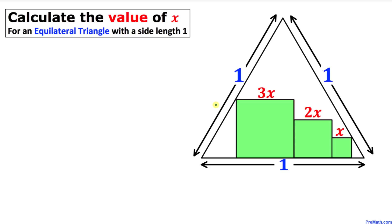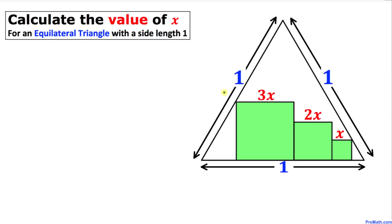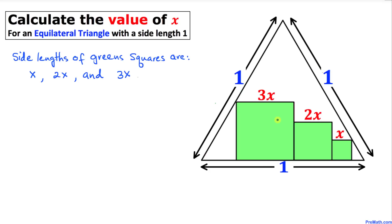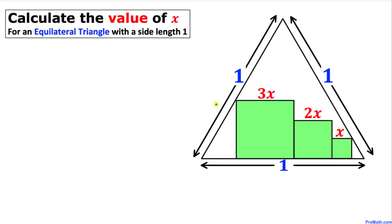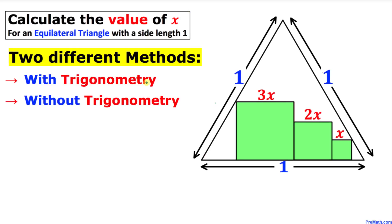Welcome to PreMath. In this video tutorial we have an equilateral triangle whose side length is 1 — that means each side is 1 as you can see in this figure. Moreover, we have three green squares inside this triangle with side lengths x, 2x, and 3x as you can see in this figure. Our job is to calculate the value of x. I have decided to solve this problem using two different methods.